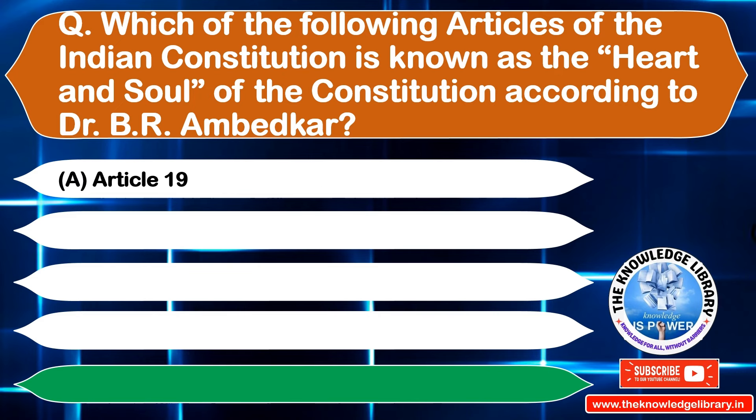The next question is: which writ is issued to question illegal appointment to a public office? Option A: Mandamus, Option B: Quo Warranto, Option C: Certiorari, Option D: Habeas Corpus. The correct answer is Option B: Quo Warranto.